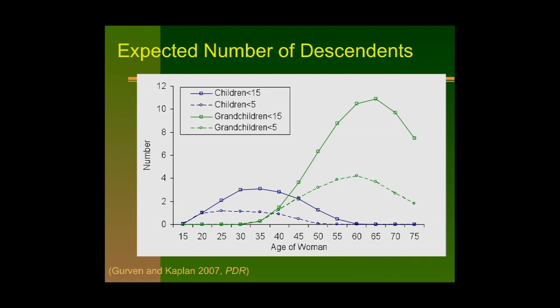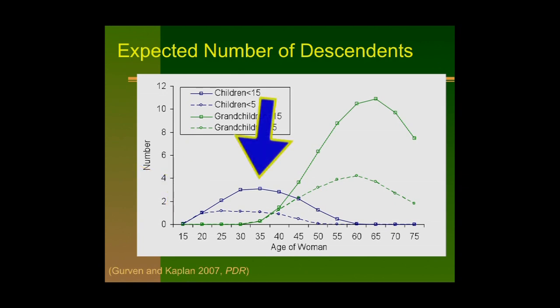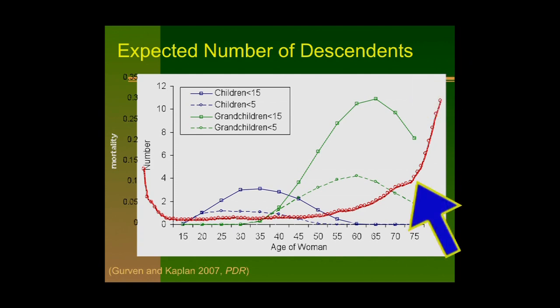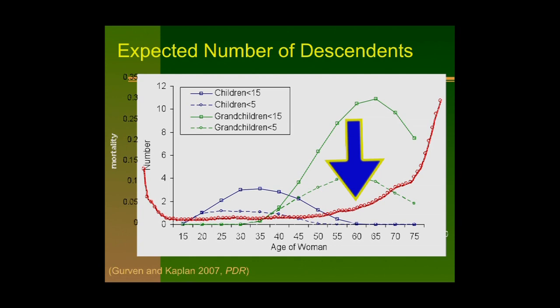Here is a way of looking at how these things may be linked together. The expected number of descendants based on a normal family growth pattern shows a peak number of dependent kids in your 30s and a peak number of dependent grandchildren in your 60s. Just as the number of dependents is going down, the instantaneous risk of mortality stays quite low until about age 60—and that's where we see the really big acceleration.